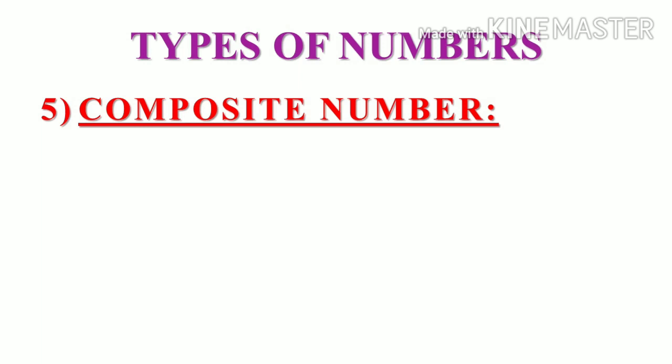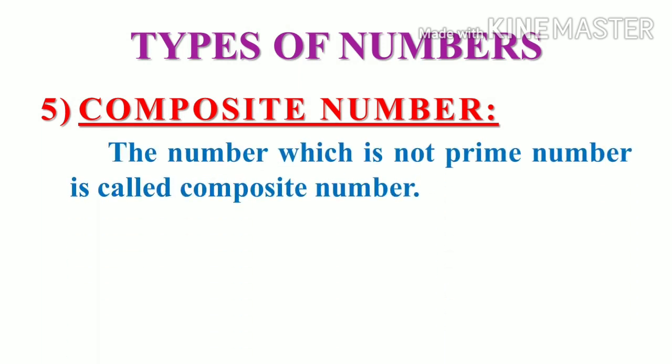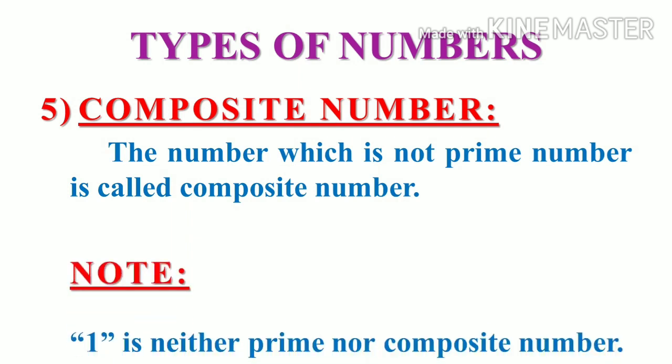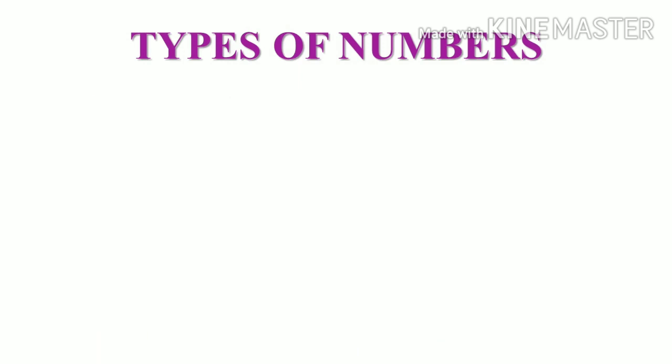Next, composite numbers. Composite numbers are the numbers which are not a prime number. It has the factors other than 1 and its own number. Say for example, if we take 8, 2 into 2 into 2. We can write that as 2 is a factor which is not 1, which is not its own number.